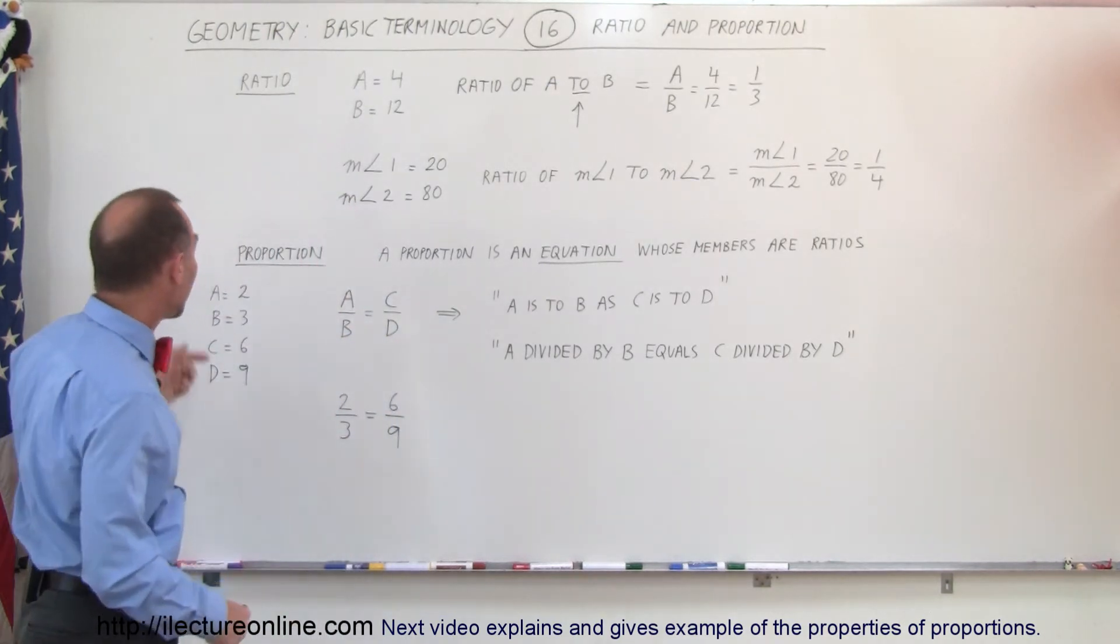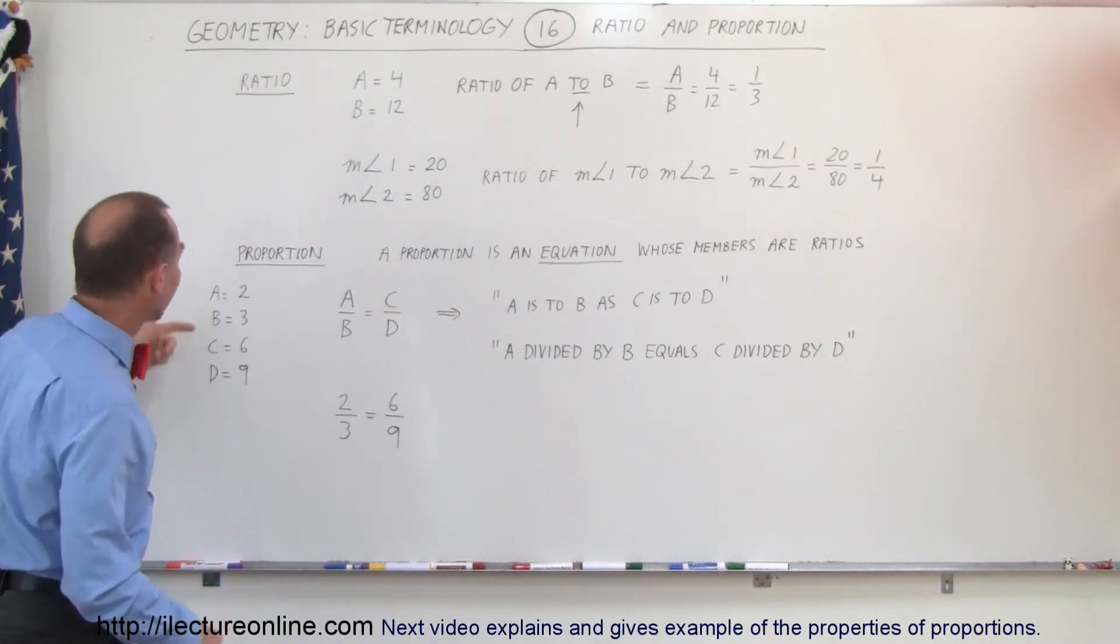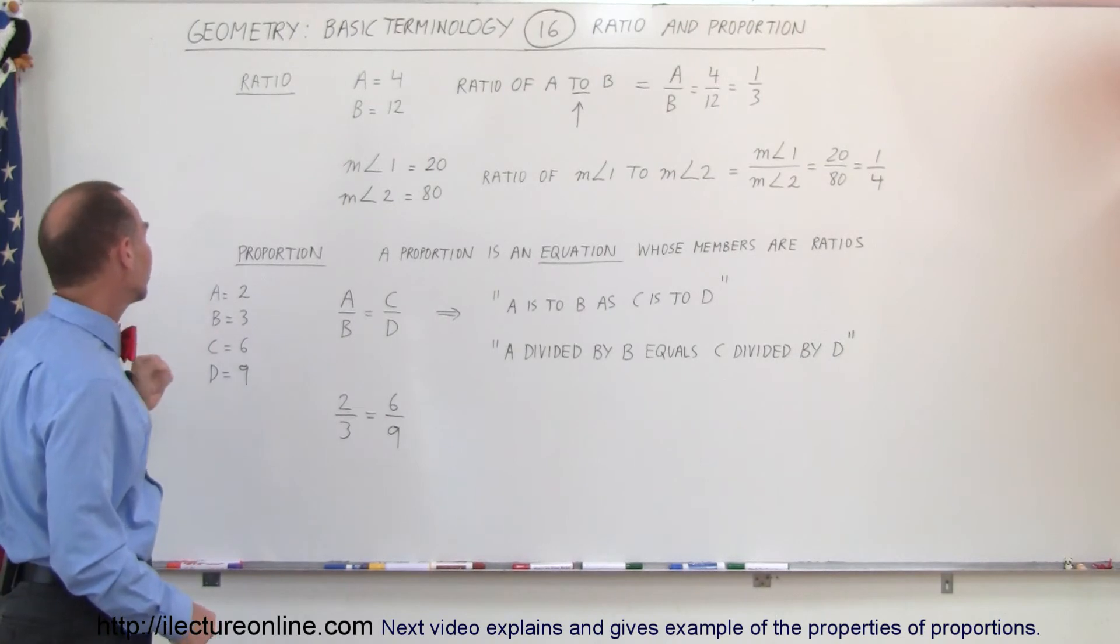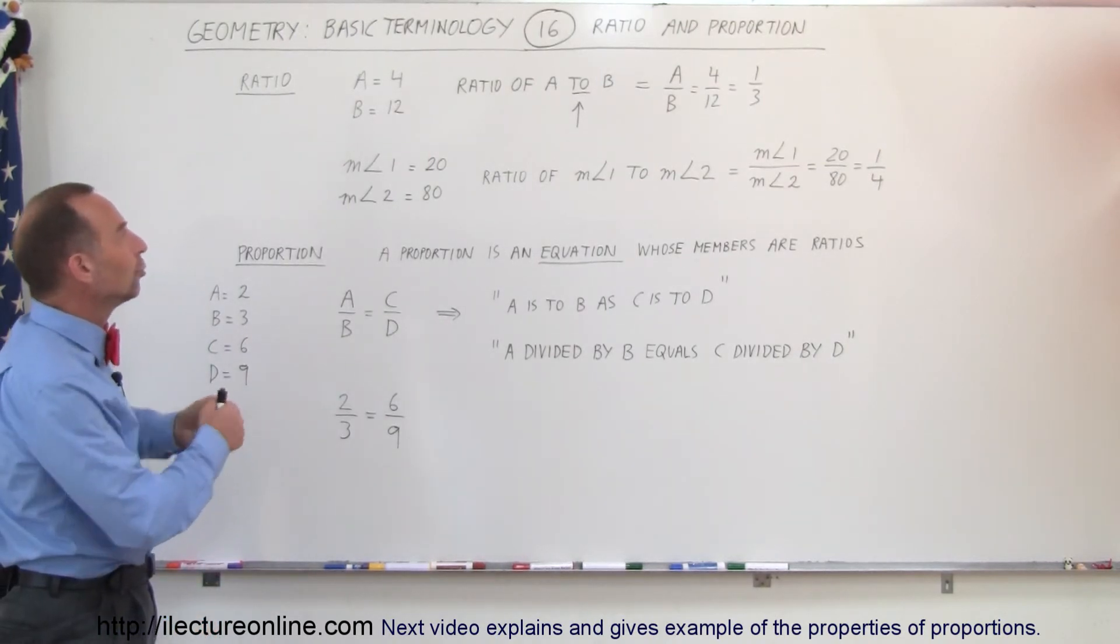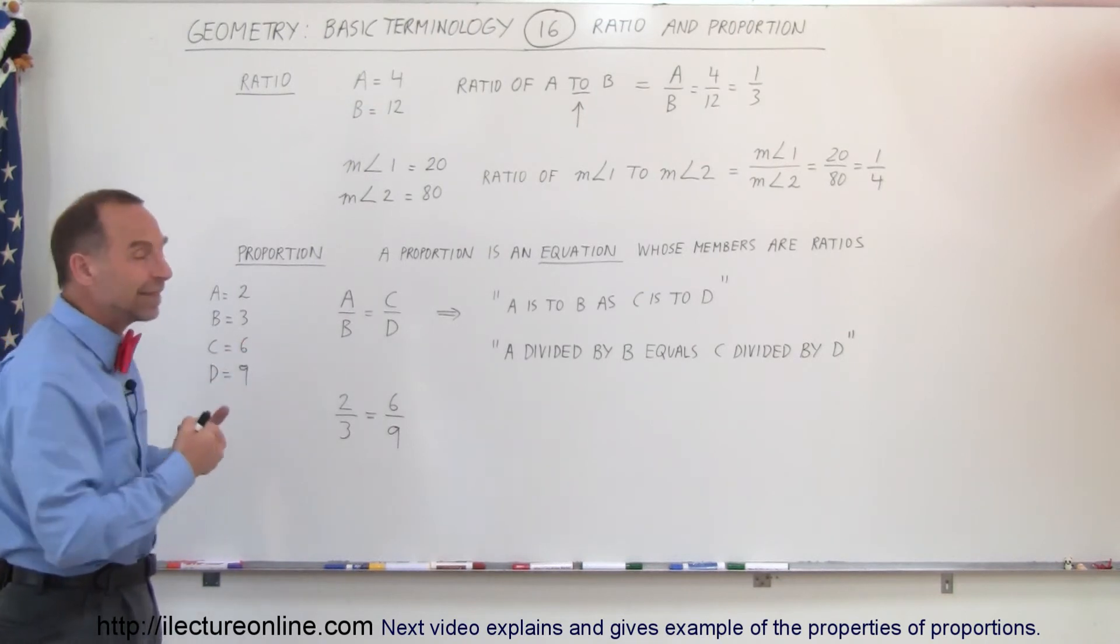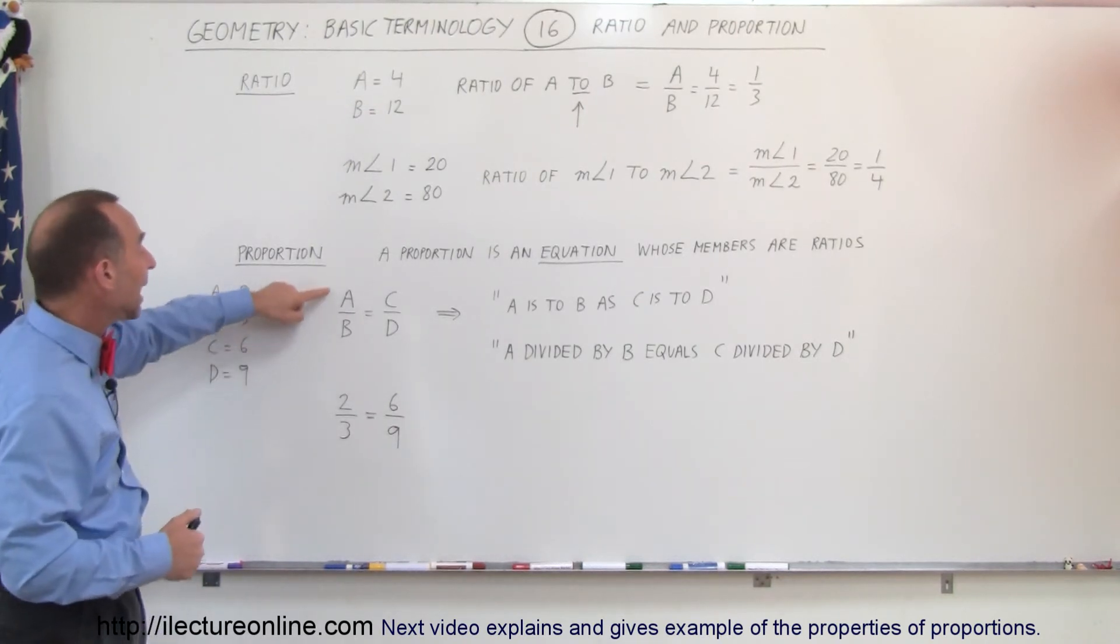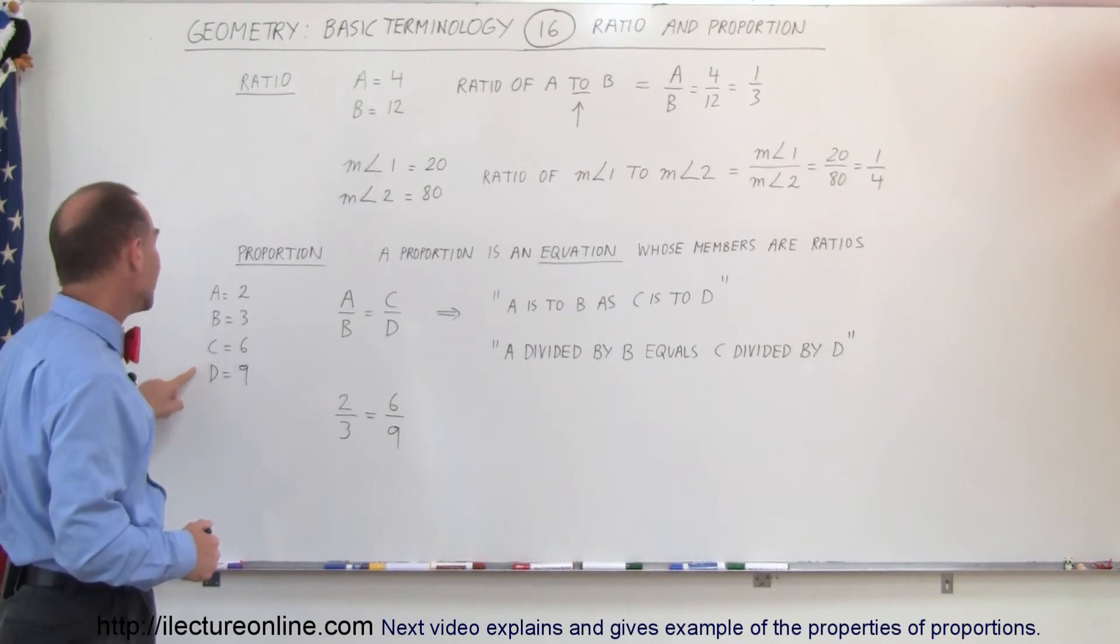So here we can say that we have A, B, C, and D. Let's say that A is equal to 2, B is equal to 3. So when we compare A to B, when we do the ratio of A to B or take the ratio of A to B, we write A divided by B. We can do the same for C and D.